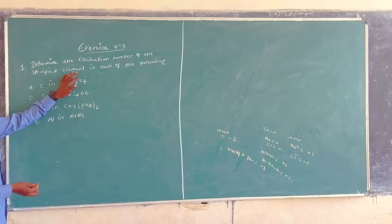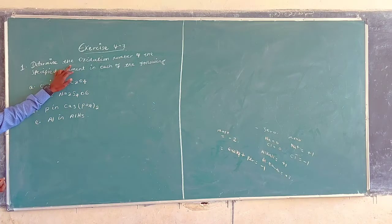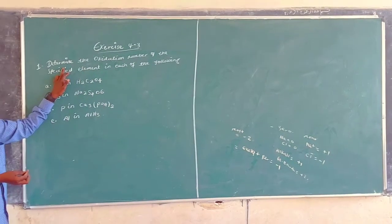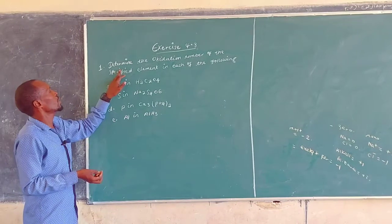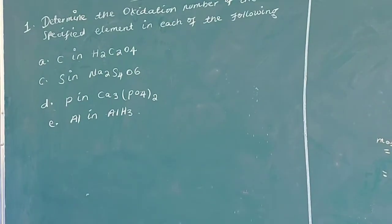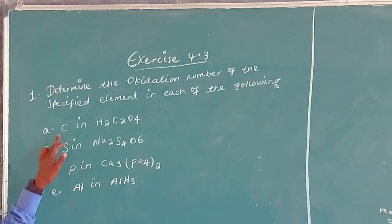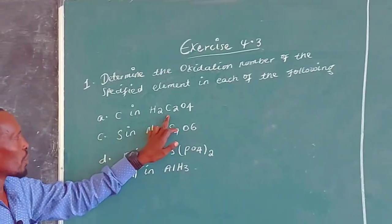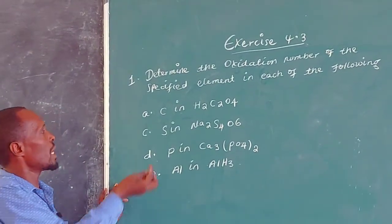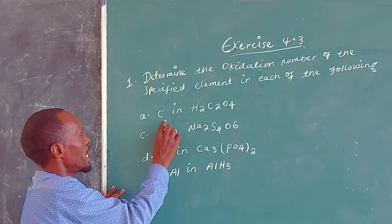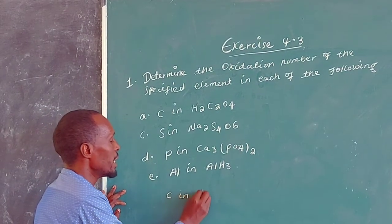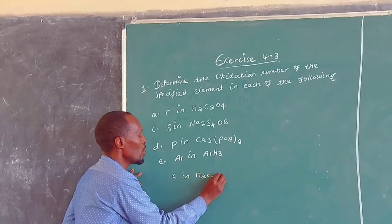We are going to try these questions — exercise 3. We need to find the oxidation number of the specified elements in each of the following compounds.